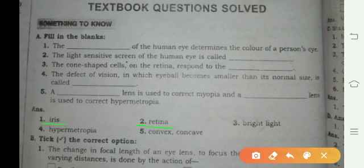Third: the cone-shaped cells on the retina respond to bright light. Fourth: the defect of vision in which the eyeball becomes smaller than its normal size is called hypermetropia. Fifth: a convex lens is used to correct hypermetropia.